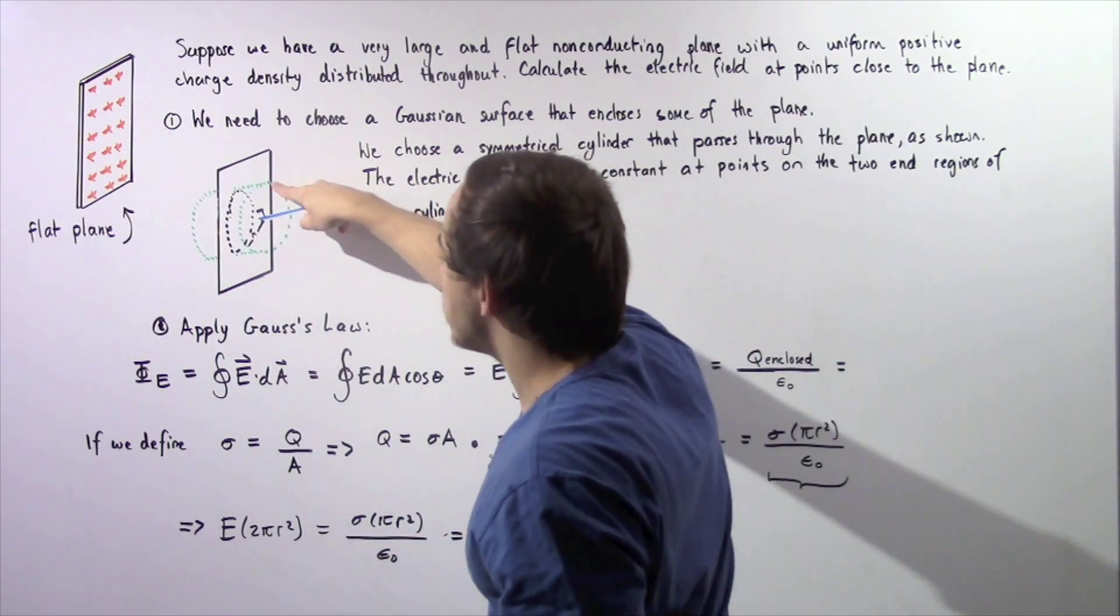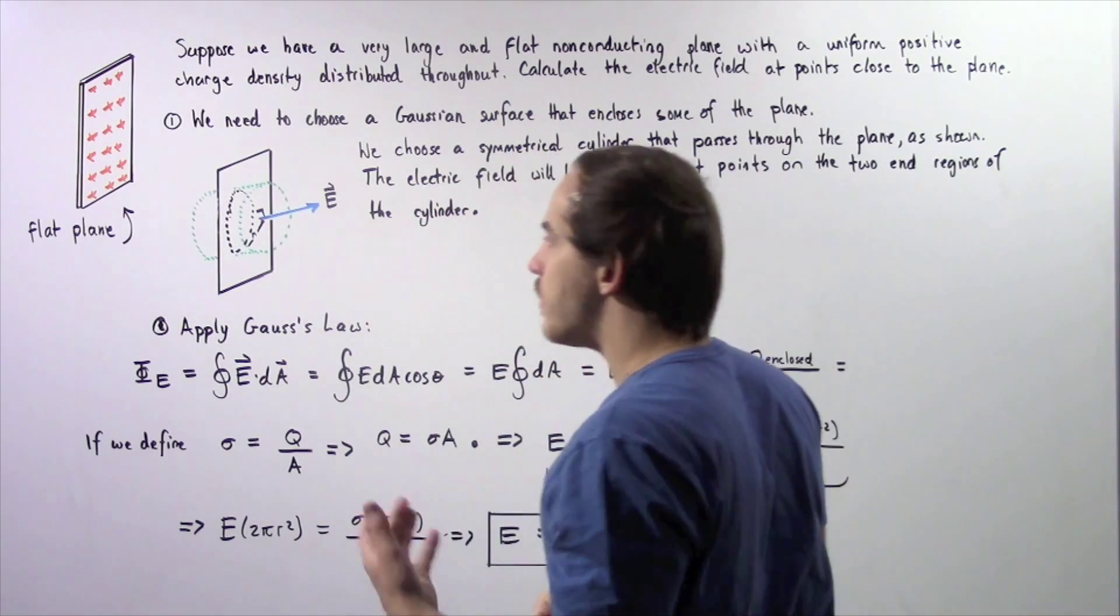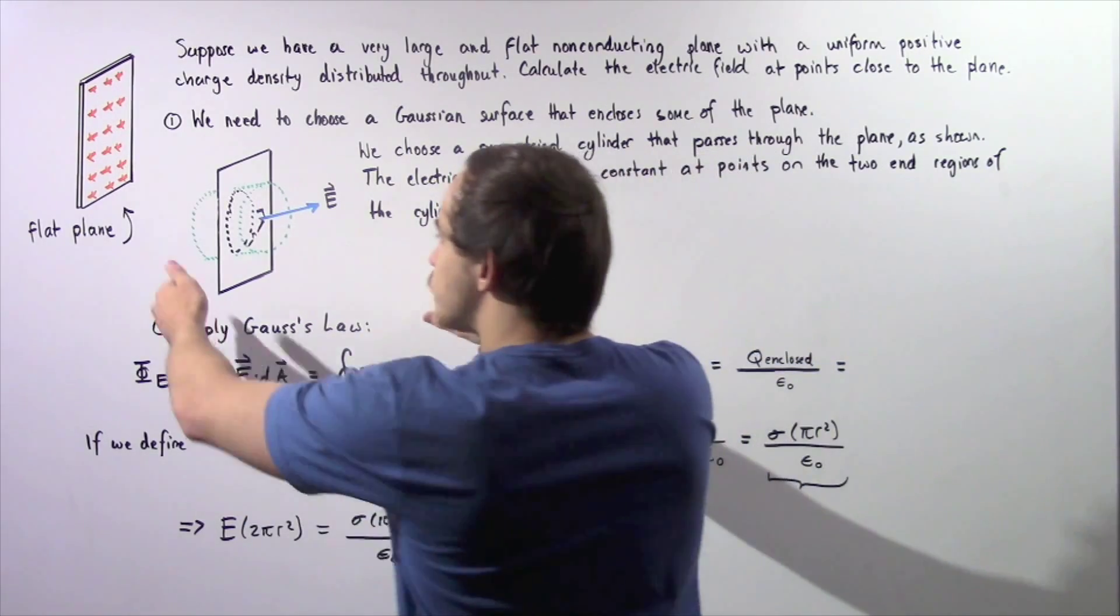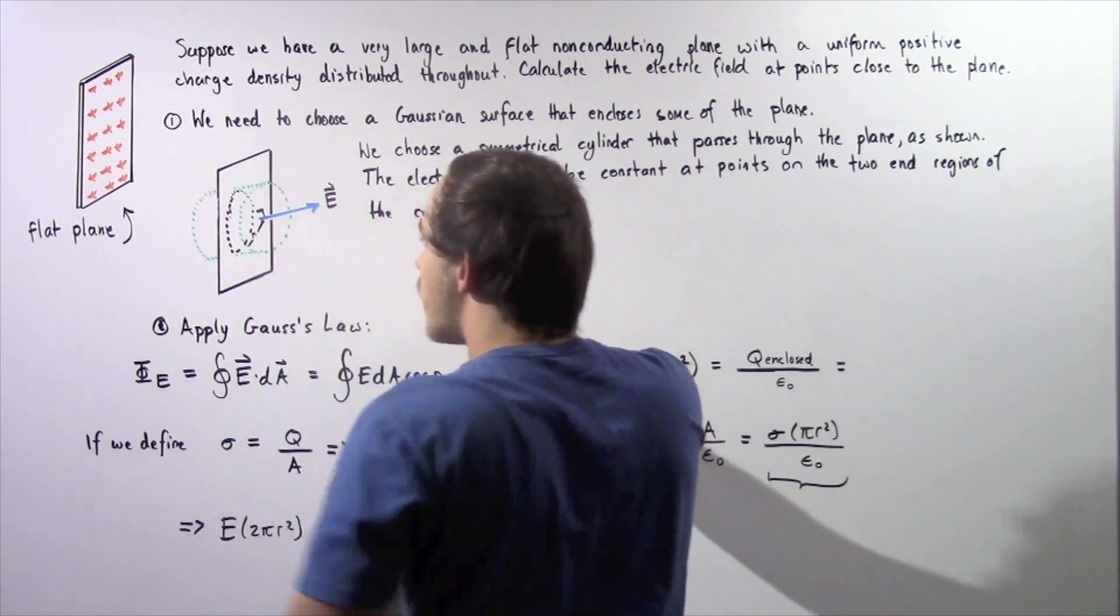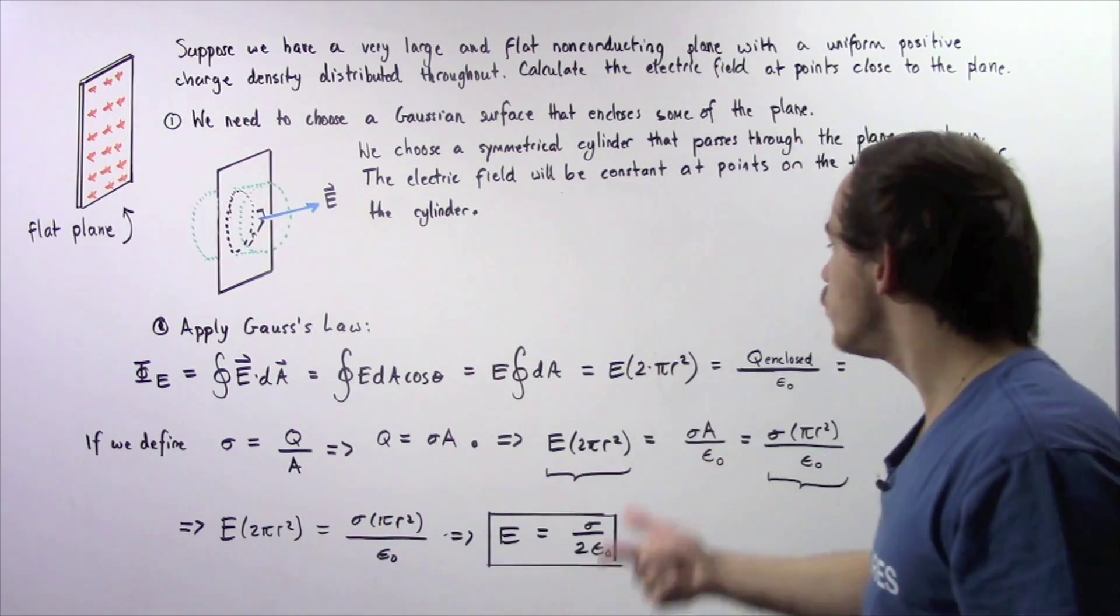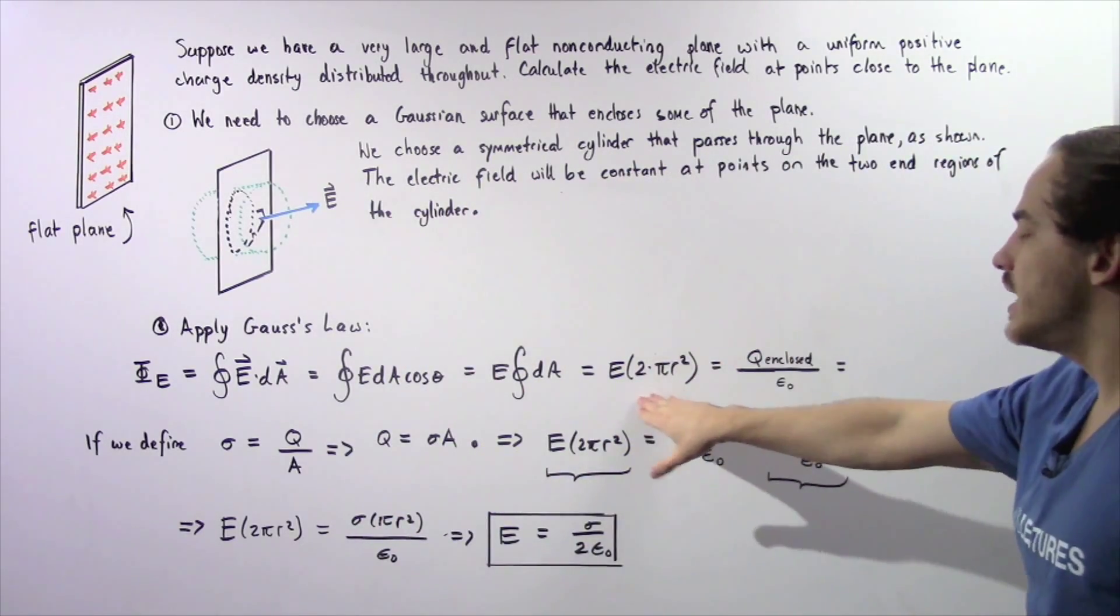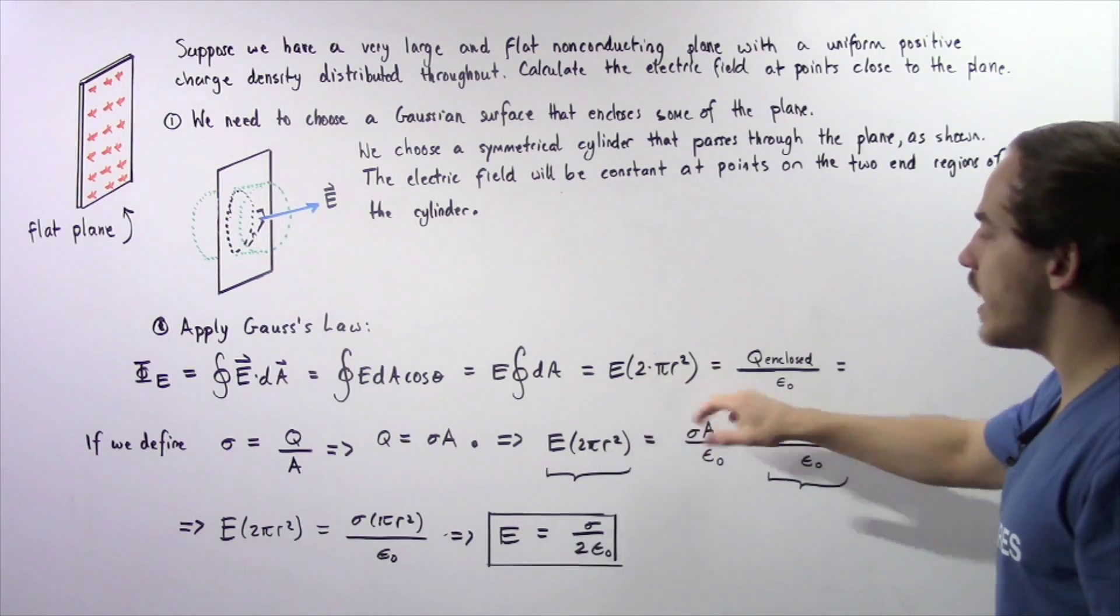We're looking at this end and the other end. The surface area of this end is simply pi r squared. And since we have one at the other end as well, that means the surface area is 2 pi r squared as shown in the following equation.